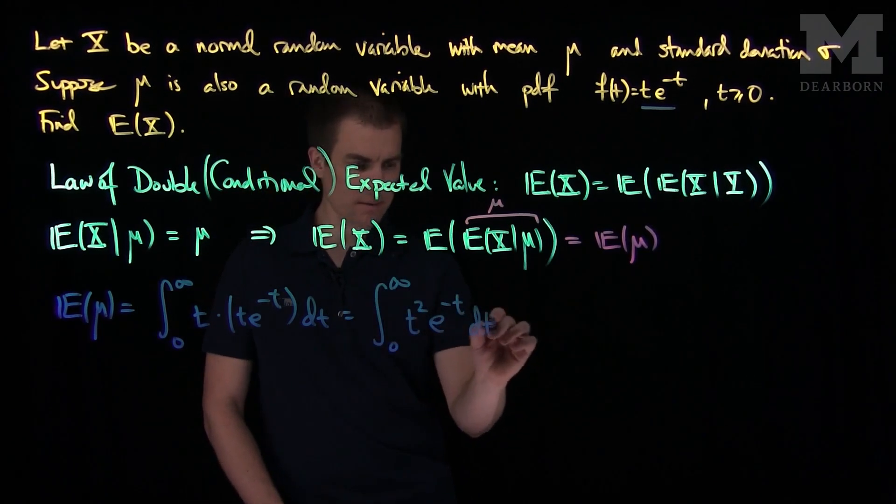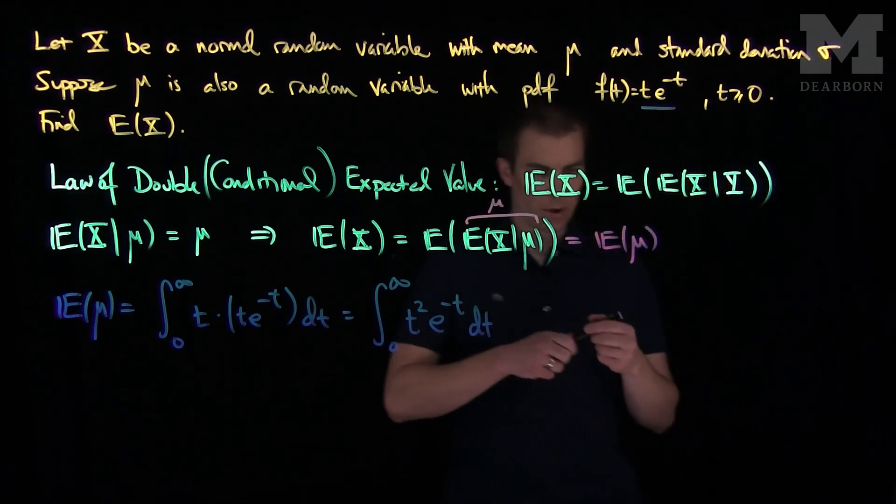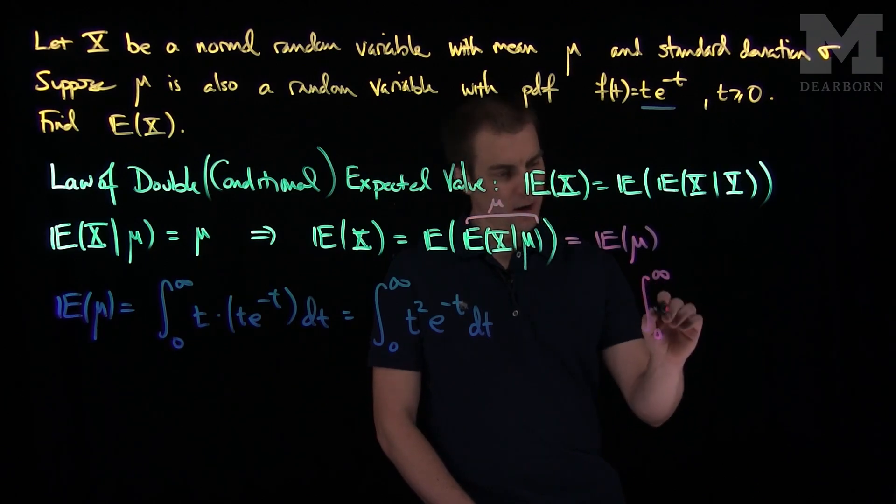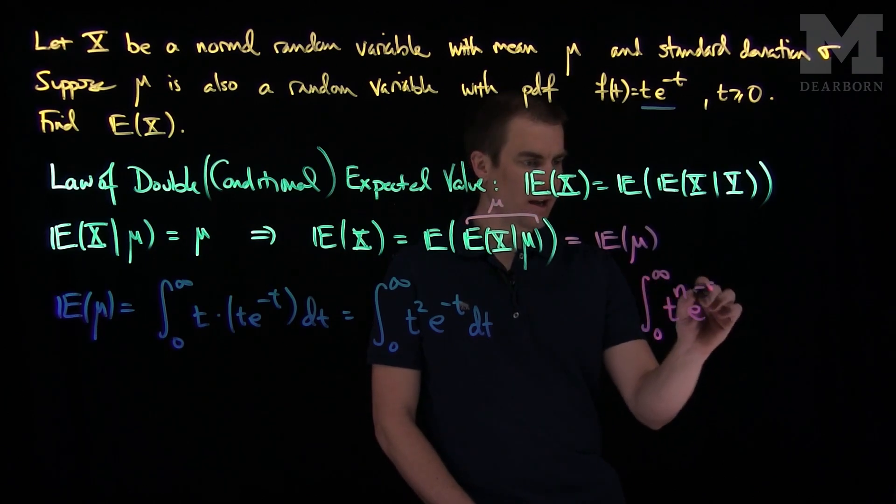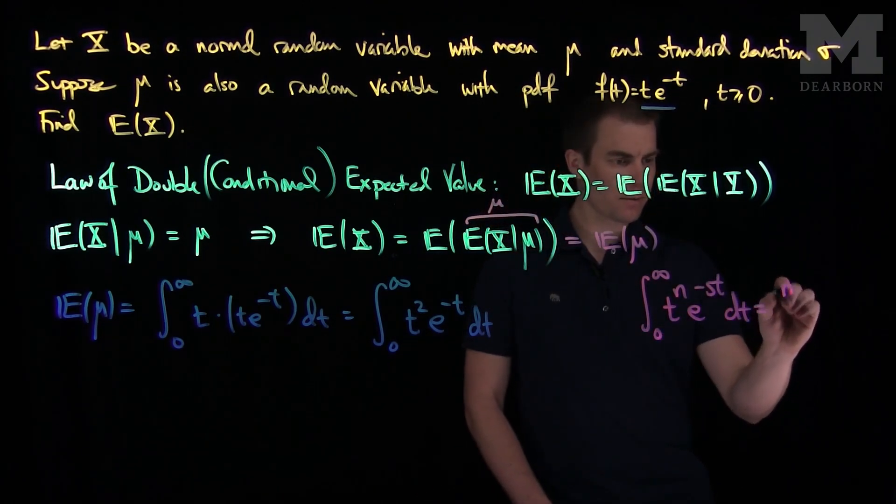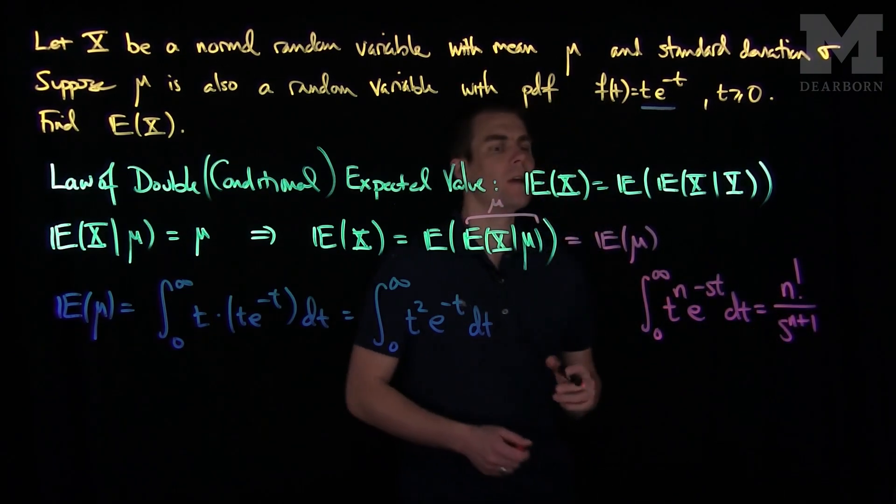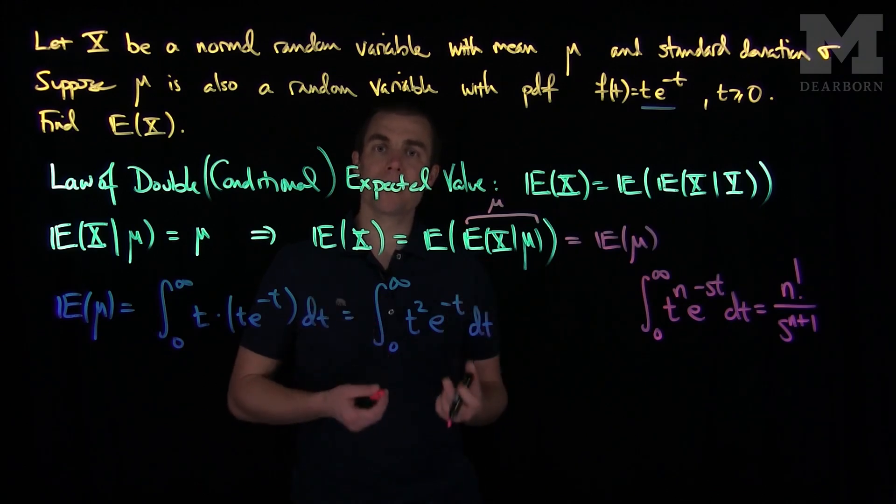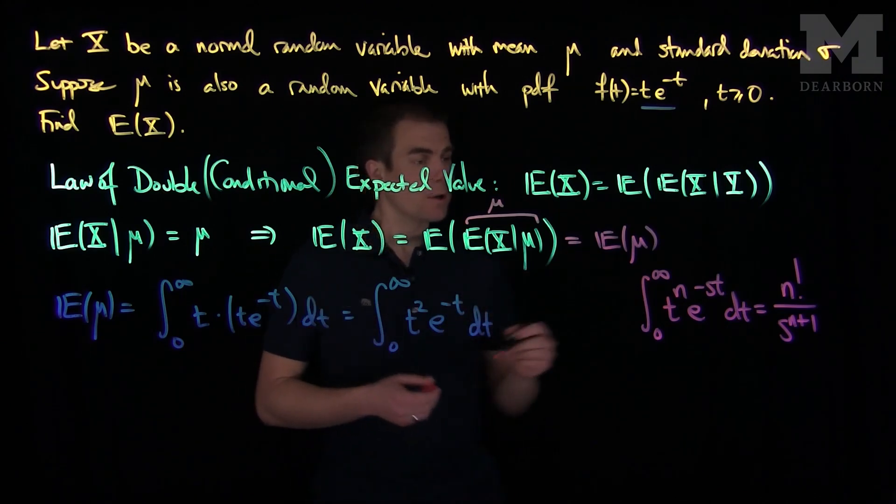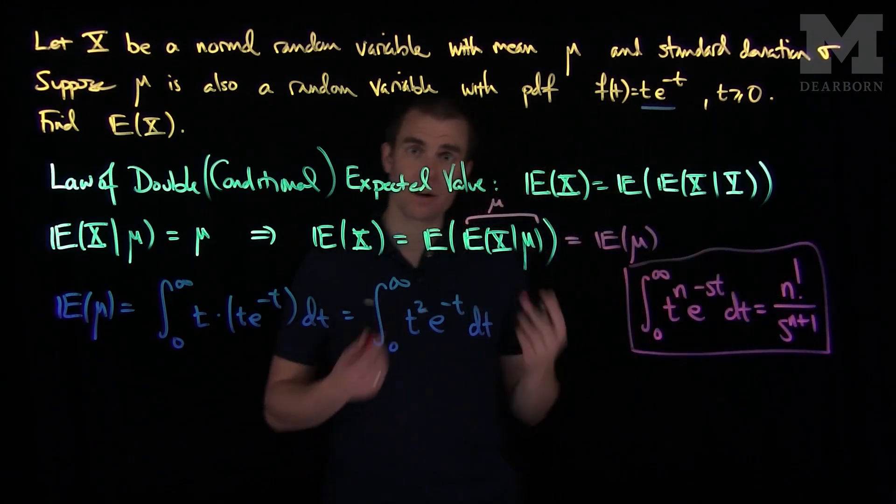And here is where we employ a very useful rule that is a helpful shortcut. It says that the integral from zero to infinity of t^n·e^(-st) dt is n factorial over s^(n+1). This rule is very useful when you are computing moments of a gamma distribution or moments of an exponential distribution. So we will employ this integral result, which you can verify by integration by parts.